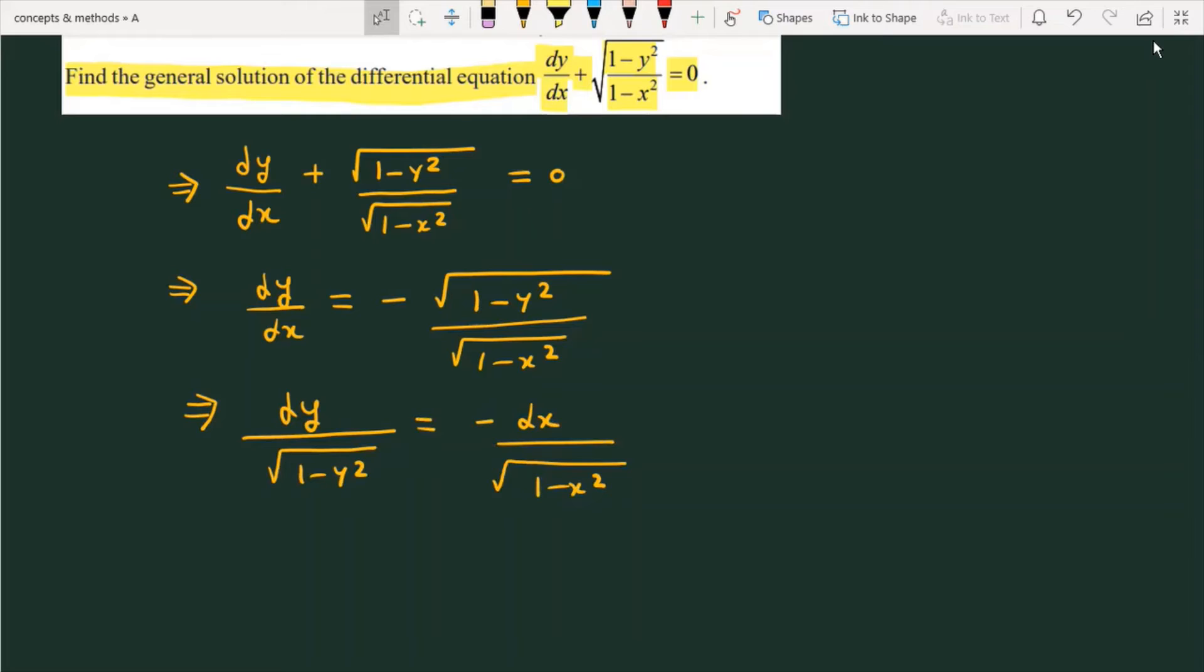So now what we have to do, we are just going to integrate both sides. And as we can integrate both sides, then this format becomes ∫dy/√(1-y²) = -∫dx/√(1-x²) + constant.